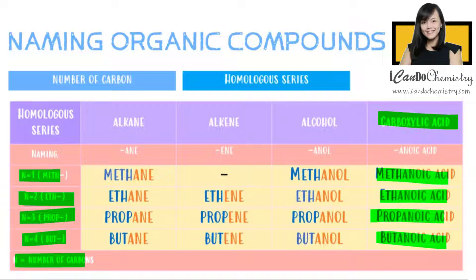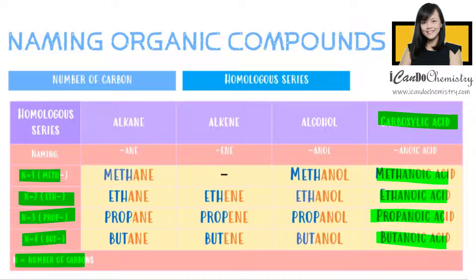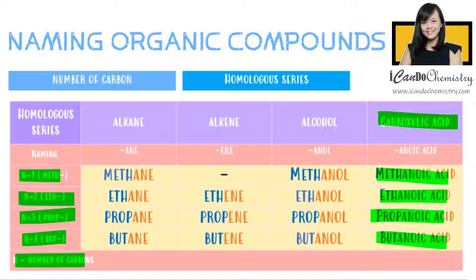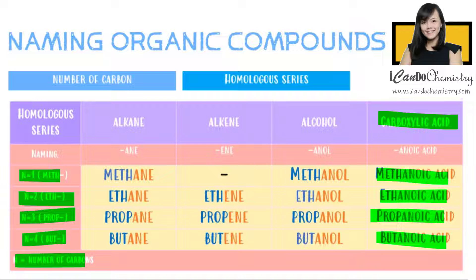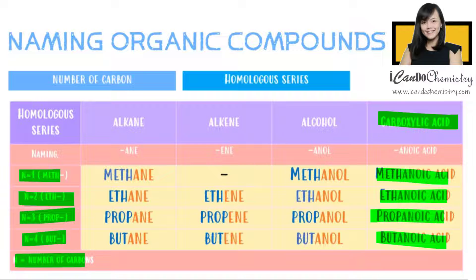How do we draw the structures of carboxylic acids? When we show all the bonds between the atoms in the molecule, we are writing down the full structure formula of the organic compound.